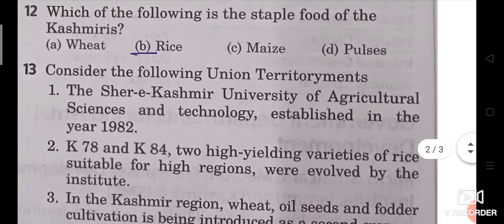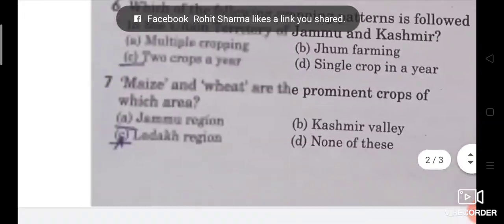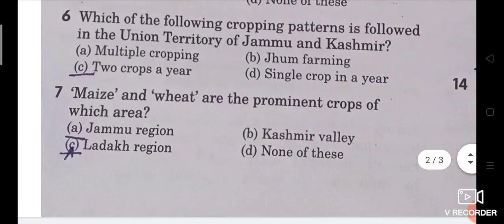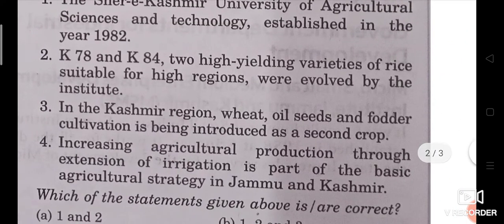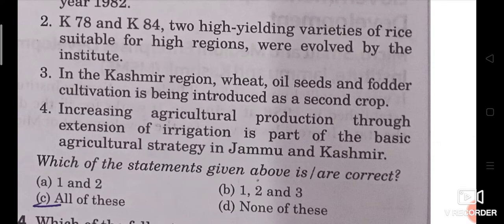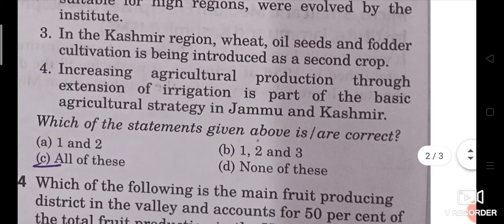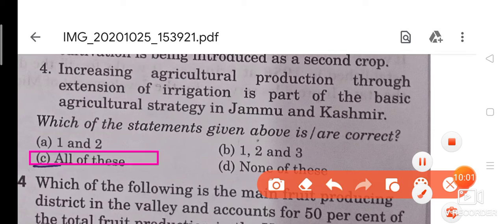Question 13: Consider the following statements. First, from 1982, Second, K78 and K84 are two high-yielding varieties of rice suitable for high regions. Which of the statements given above is or are correct? The right answer is all of these — all the statements mentioned are correct.